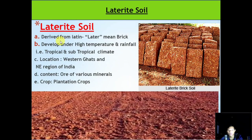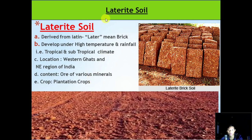Laterite soil — derived from the Latin word 'later' meaning brick. It develops under high temperature and rainfall, that is in tropical and subtropical climates. Location includes the Western Ghats and the northeast region. It contains ores of various minerals. Cashew grows very well in laterite soil.